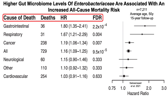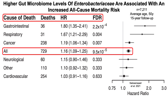To dissect this data: we've got cause of death on the left, the number of deaths, the hazard ratio, and then the FDR — the false discovery rate — as the measure of statistical significance. When looking at all-cause mortality, we can see that relatively higher levels of enterobacteria are associated with an increased all-cause mortality risk. Looking at the hazard ratio on the right, where the horizontal lines — the confidence interval — if they're both greater than one, that's a statistically significant effect, which is what we see here.